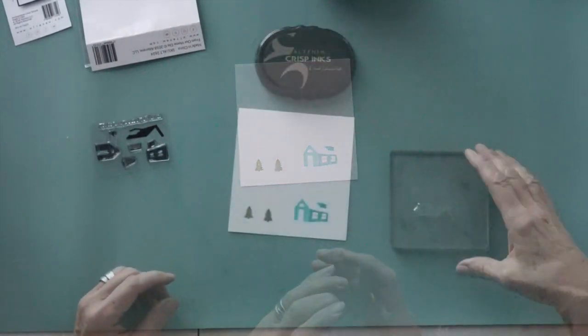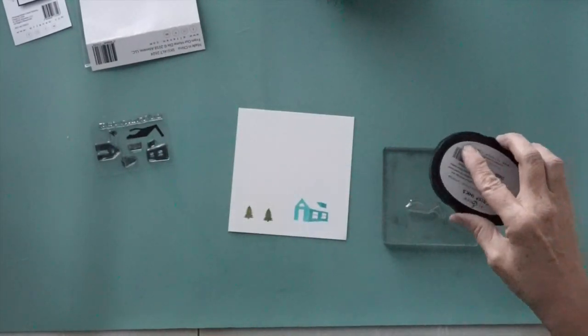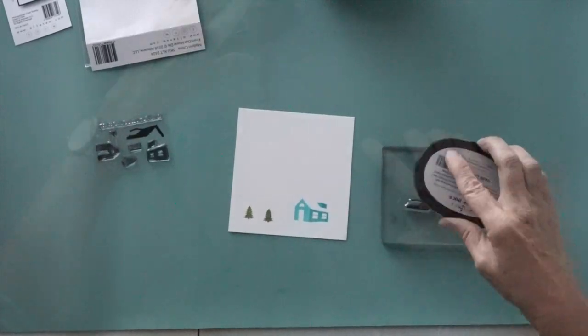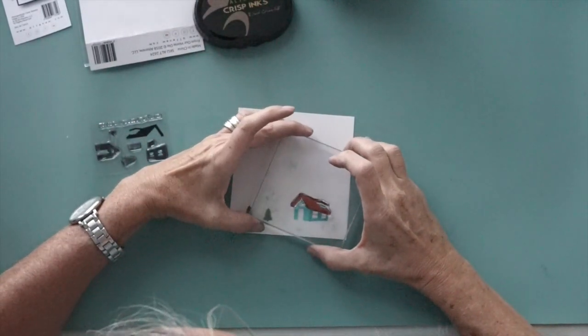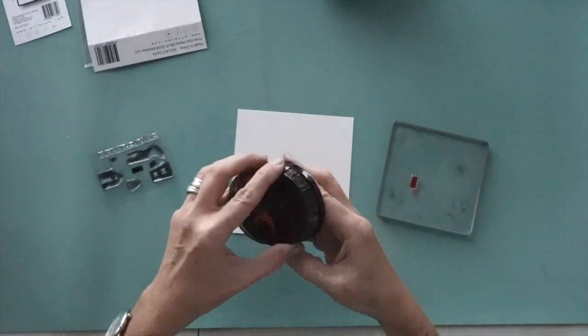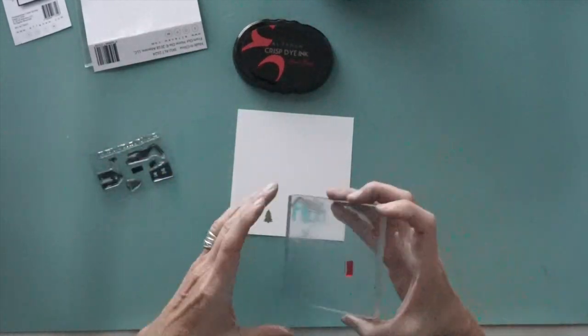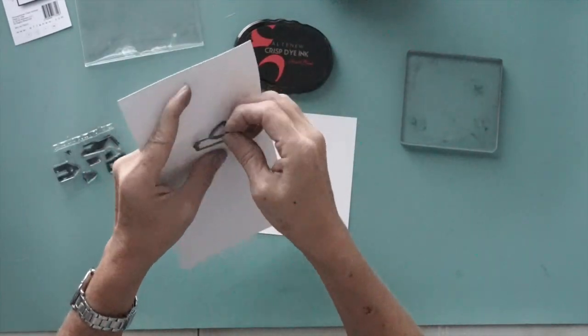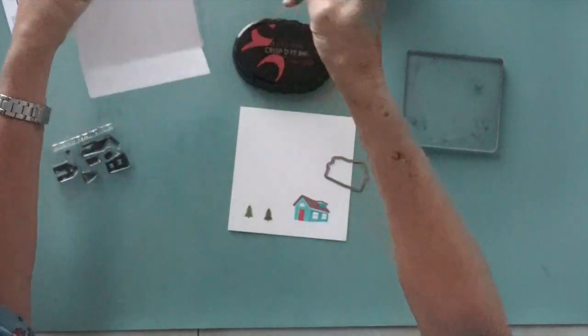And one house got a dark chocolate roof, that sounds yummy, and the other house got a black roof. Then I used Heartbeat ink for the red doors and finally I die-cut all the individual pieces.